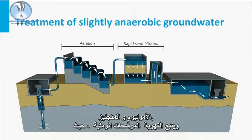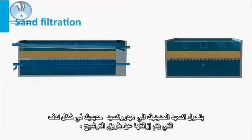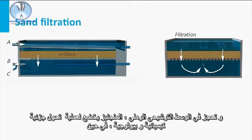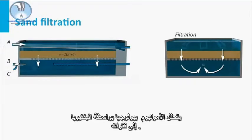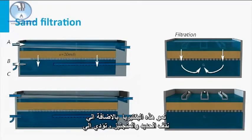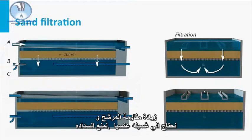Aeration is followed by sand filtration, where the oxidized ferric iron hydrolyzes to iron hydroxide flocs, which are removed by filtration in the sand bed. Manganese undergoes a partial chemical and biological transformation, while ammonium is biologically degraded by bacteria to nitrate. The growth of these bacteria in combination with the iron and manganese flocs results in an increase of filter resistance, and backwashing is needed to prevent clogging.